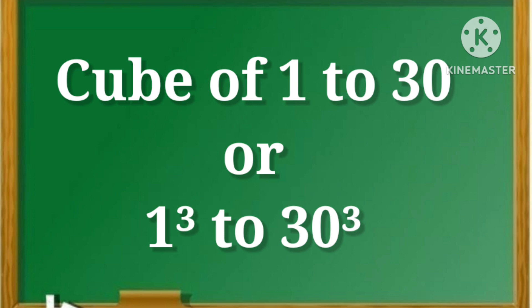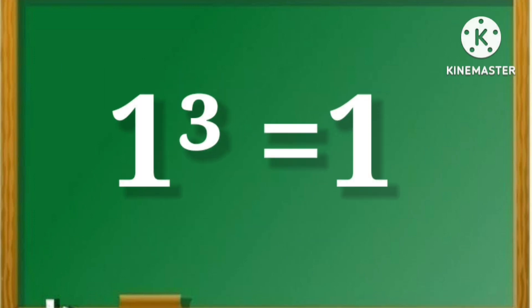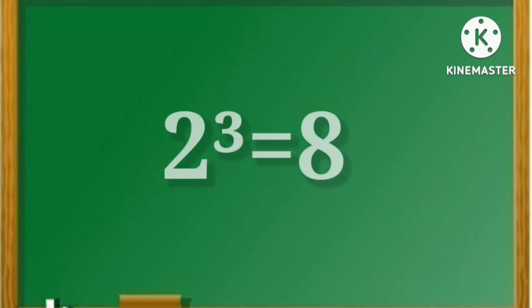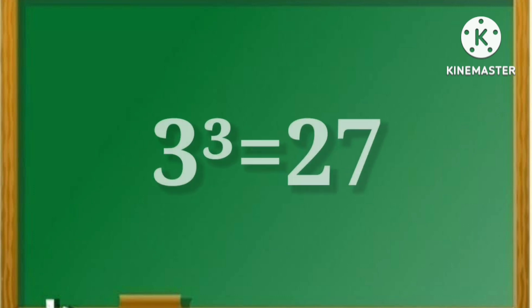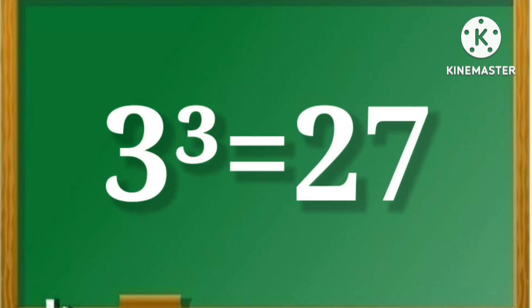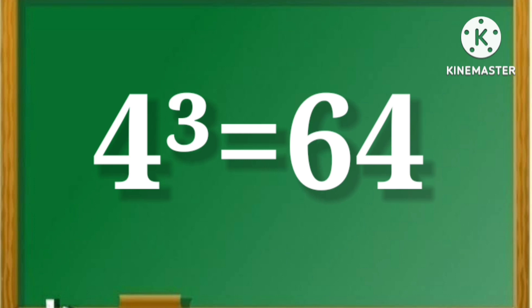So let's start. 1 cube is equal to 1. 2 cube is equal to 8. 3 cube is equal to 27. 4 cube is equal to 64.